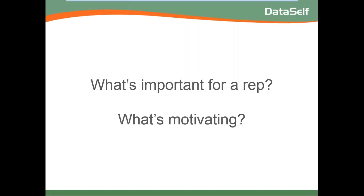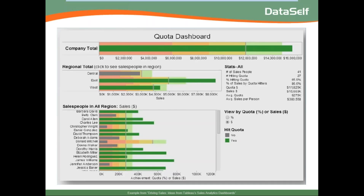What is important for a rep from a data standpoint, and what can motivate them to do better? Typically it's building dashboards that kick into their main traits — competitive, numbers-driven, and curious. One important dashboard is a quota dashboard showing whole-company metrics, broken down by region and then by individuals.